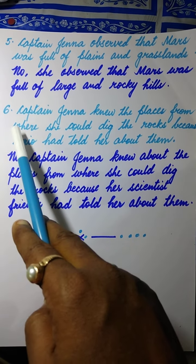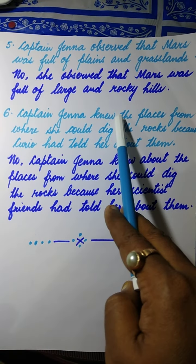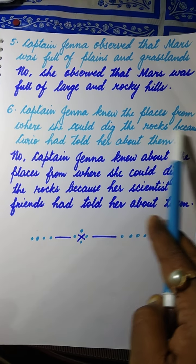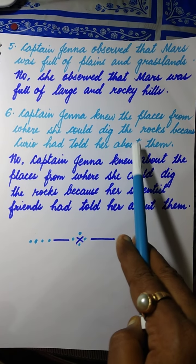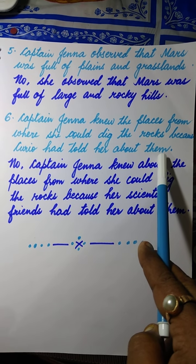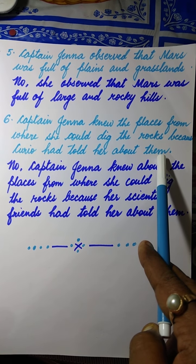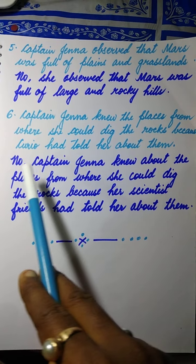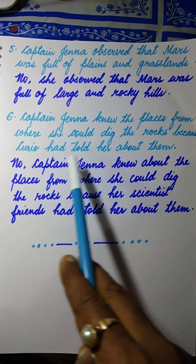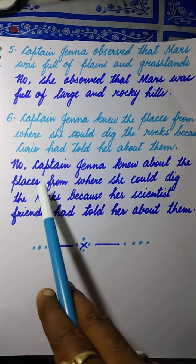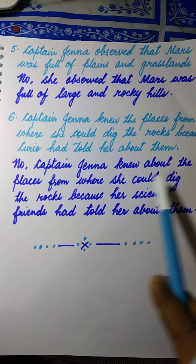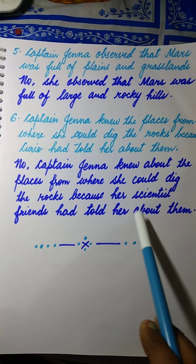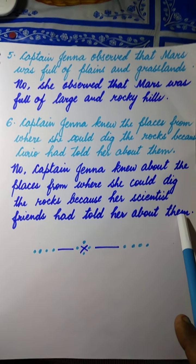Just see number 6: Captain Gina knew the places from where she could dig the rocks because Curio had told her about them. This sentence is again wrong. The correct sentence is: Captain Gina knew about the places from where she could dig the rocks because her scientist friends had told her about them.